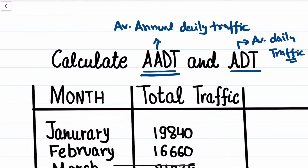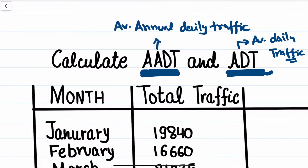AADT is used when we have done the traffic volume study and represent data in the form of AADT when we have a huge amount of data — that is, we have done the traffic volume study for one full year. When we have done the traffic study for, say, seven days or a month, then we go for the ADT mode of representation. I have already discussed traffic volume, AADT, and ADT in my previous video, so you can go and watch the theory and basic concepts there. In this video we are going to solve the numerical on how to find out the AADT and ADT values.